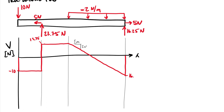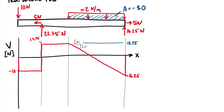At the end of the distributed load region we have dropped to minus 16.25, then jump back up to zero. All shear and moment diagrams close to zero. To validate: the total change in shear equals the area under the load. Starting at positive 13.75 and dropping by the area of the load region — which is minus 2 N/m times 15 m, giving minus 30 — brings us to minus 16.25. The difference between 13.75 and minus 16.25 is indeed minus 30. That is the shear diagram.